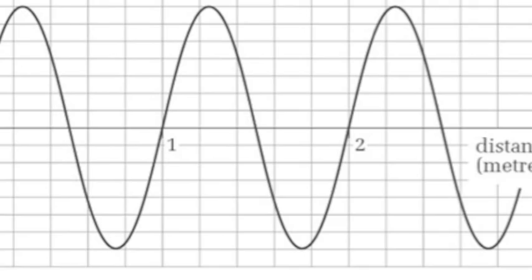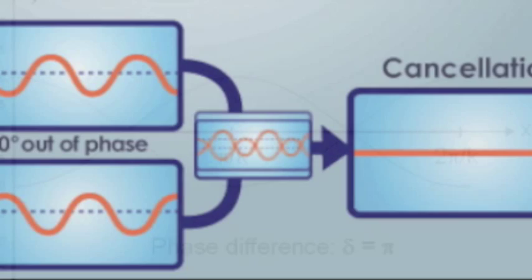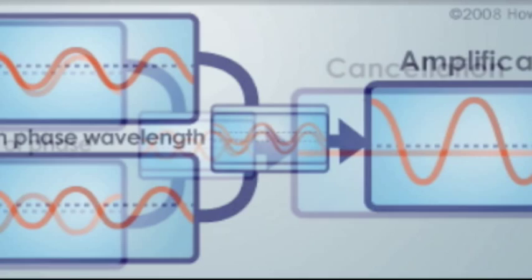When two or more wavelengths are reflected off each other, their phases will either be in sync or off. When two wavelengths are off, they will cancel each other out and weaken the intensity of color.